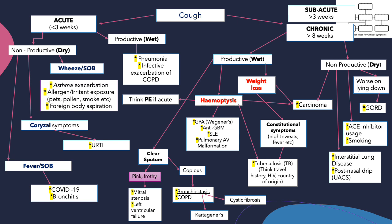A subacute or chronic cough that is wet and productive of clear sputum should get you thinking about cardiac causes such as left ventricular failure, mitral stenosis, bronchiectasis, or COPD. In patients that you suspect bronchiectasis, you should also start thinking about whether this could be a case of cystic fibrosis or Kartagener's syndrome, although Kartagener's is more rare.